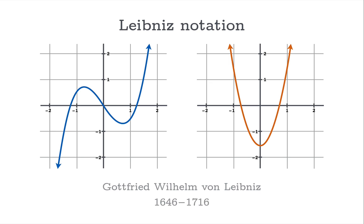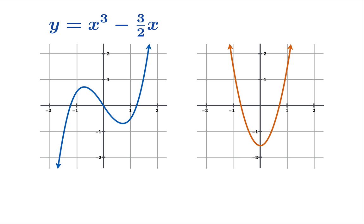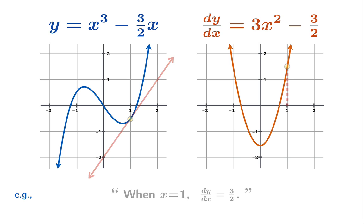Leibniz notation, named after the German mathematician Gottfried Wilhelm von Leibniz, is a different kind of notation where, say, we didn't have a function name. Say we just called it y equals x cubed minus 3/2 x. If that's our original curve, then we would write this notation dy divided by dx, or what we would read as dy dx. dy dx in this case would be 3x squared minus 3/2. How might we use this Leibniz notation? We might say something like, when x equals 1, dy dx equals 3/2.